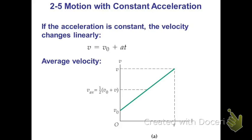If the acceleration is constant, the velocity changes linearly, and the velocity versus t graph is a linear straight line graph, and the slope of this graph will be the acceleration.